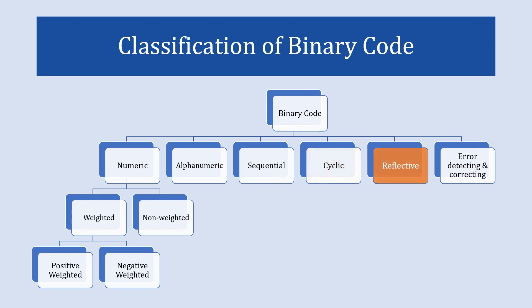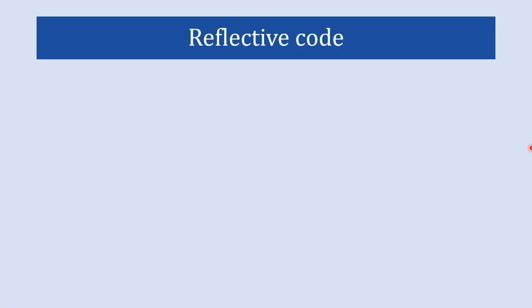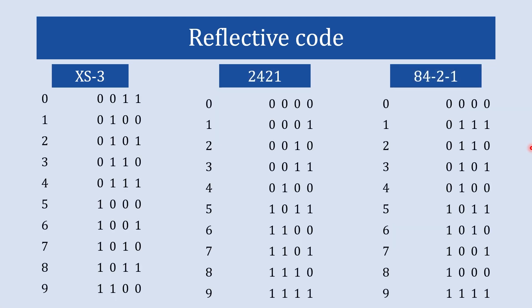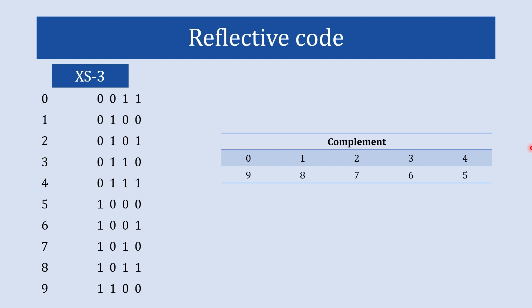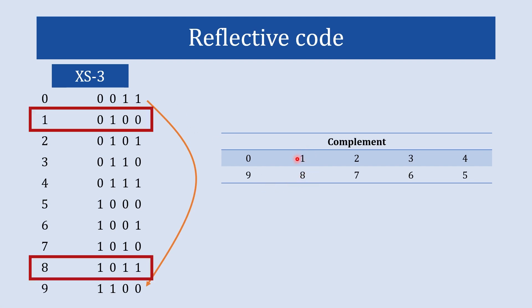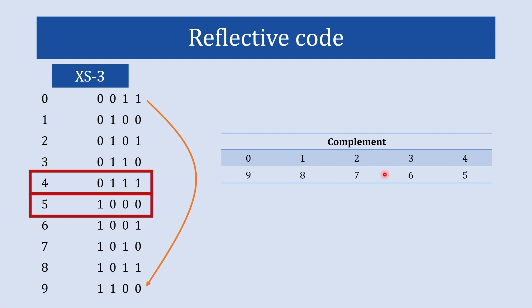The next code is reflective code, also known as the self-complementing code. Examples include excess-3 code, 2421 code, and 84-2-1 code. In reflective code, the code of digits zero to four is complemented by the code of nine to five. The code of nine is the complement of zero, the code of eight is the complement of one, and likewise the codes of seven, six, and five are the complements of two, three, and four.